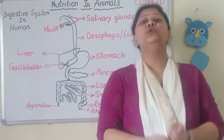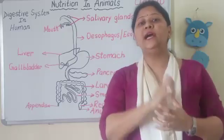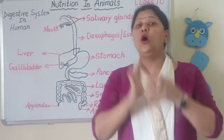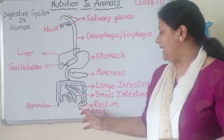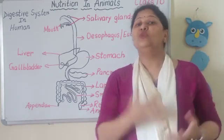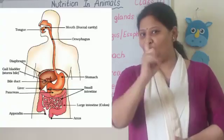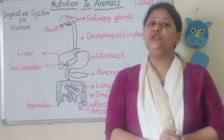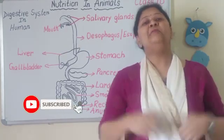Uske baad jo unabsorbed food hai, woh jayega large intestine mein, jahan pe water ka absorption hoga. Aur jo undigested food hai, unwanted material hai, wo nikal jayega through anus. So my dear children, this was all about today's chapter nutrition in animals. I hope I have made everything clear. Do not forget to like, share, and subscribe to my YouTube channel Learning Science with Chaita. Bye bye!